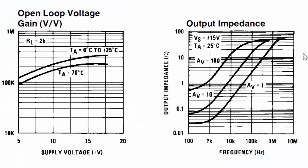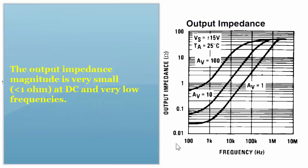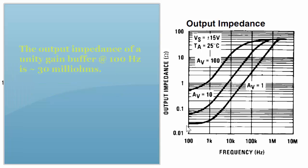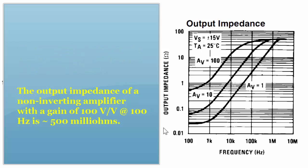The output impedance of the amplifier as a function of frequency: at very low frequencies, the output resistance of the amplifier is going to be very small. According to this graph, if you use this operational amplifier as a unity gain buffer at 100 hertz, the output resistance is going to be about 30 milliohms. Versus if you use it as an amplifier with a gain of 100 volts per volt, again at 100 hertz, the output resistance is going to be something on the order of 0.5 ohms.